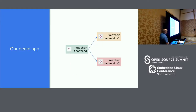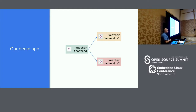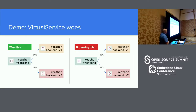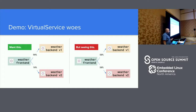The demo app I've got is a simple front-end with two back-ends — version one called 'single' and version two called 'multiple' — giving me weather info for a few cities. The problem is that we want a 90-10 split between single and multiple, but we're still seeing a 50-50 split. So how do we debug that?